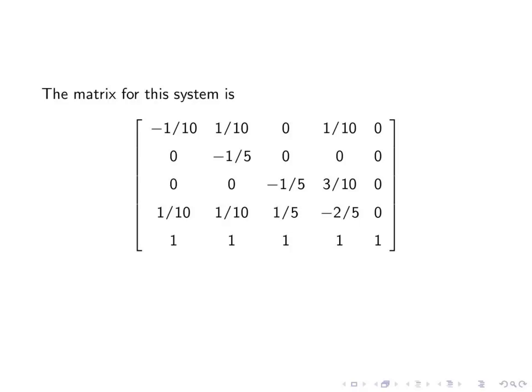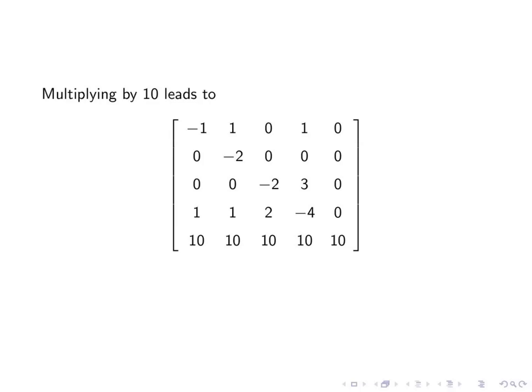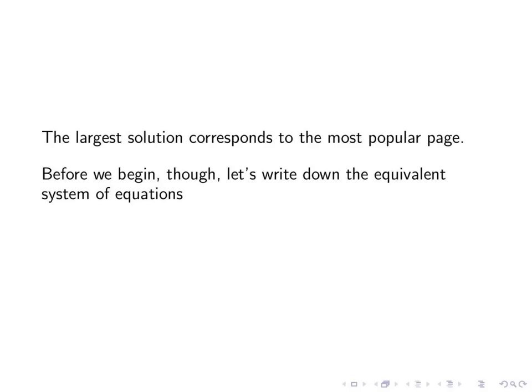The matrix for this system looks like this, and notice all the fractions. One of the nice things about matrices is we can use arithmetic and multiply the whole system by ten, and no more fractions. That works out pretty nice. Now we have a very familiar scenario. Notice we have the one here. It's negative, but that shouldn't be as much of a problem.